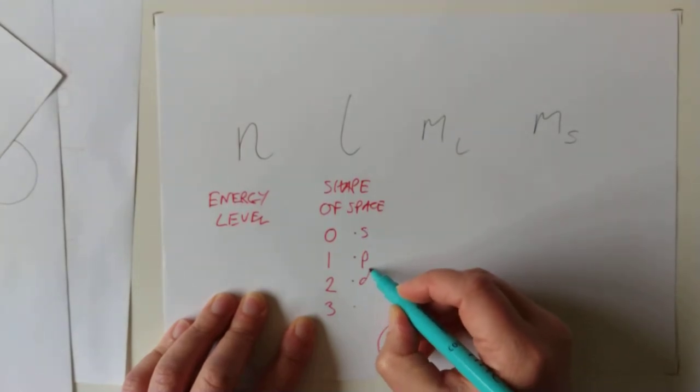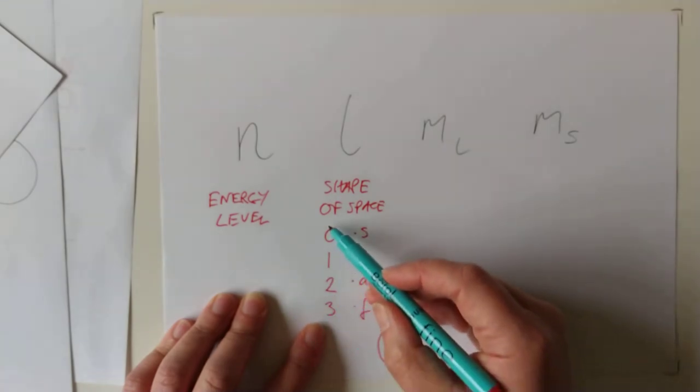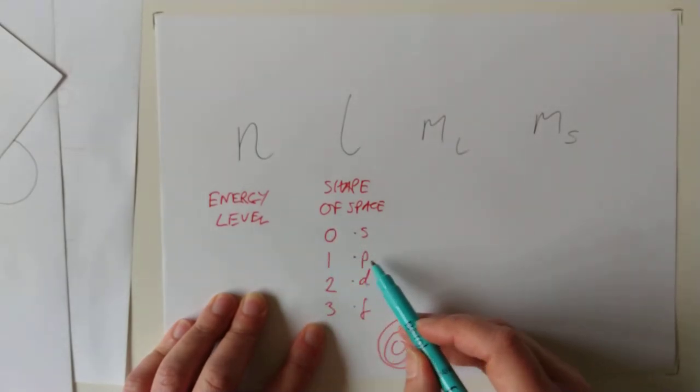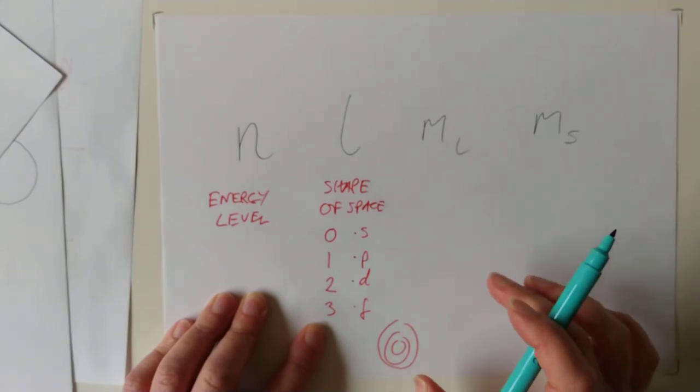S, P, D, and F. So basically you have a little table in your head, and when you see a value of L, you'll have that corresponds to a P orbital, and it's such and such a shape, which we'll show you later on.